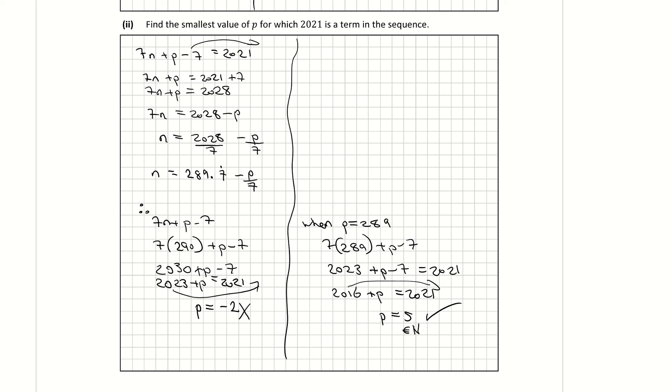So the smallest value of p is 5. There may be other approaches, but that gives us our answer for question 4.